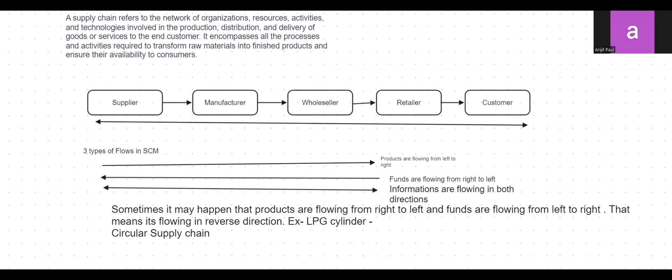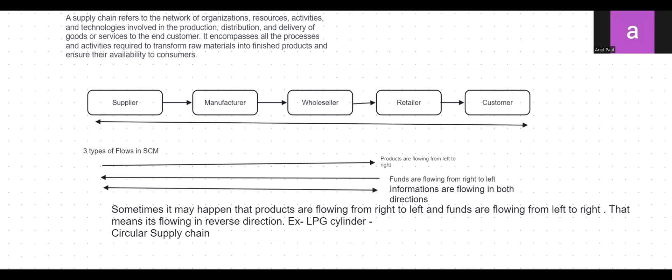There are three different types of flows in the supply chain. Raw materials come from the supplier to the manufacturer, who turns them into finished goods and sends them to the wholesaler, who sends them to the retailer, who sends them to the customers. Based on that, we can say products are flowing from left to right.